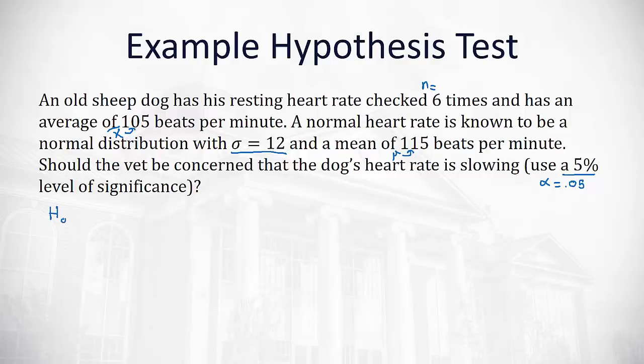So let's see if we can identify what our null hypothesis is. The null hypothesis is that population mean, the mean of all sheepdogs, is 115 beats per minute. The alternative hypothesis, what we're trying to show, is that the dog's heart rate is slowing. Slowing means it's getting smaller. We want to show that μ is smaller than that 115.